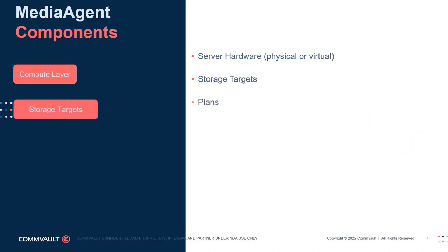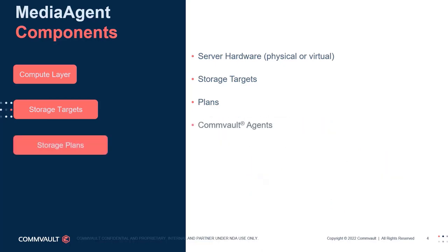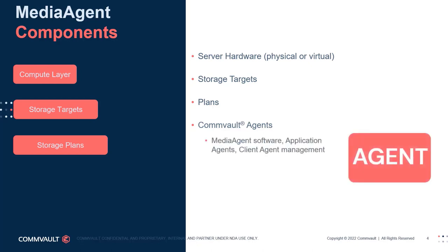The next component is the logical storage plans. A plan defines where data gets copied, how long that data remains there, the SLA, and the various storage utilization features. Another component is the software agent or agents required to communicate with production systems. Depending on the requirements, additional software can be installed on the media agent, which enables native communication with production systems, reduces overhead, and enables data translation — for example, reading from one hypervisor and writing to another.